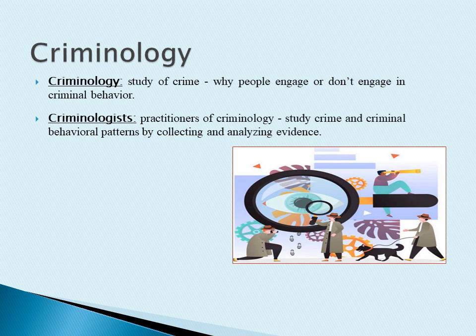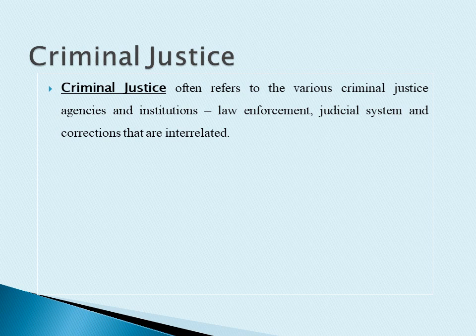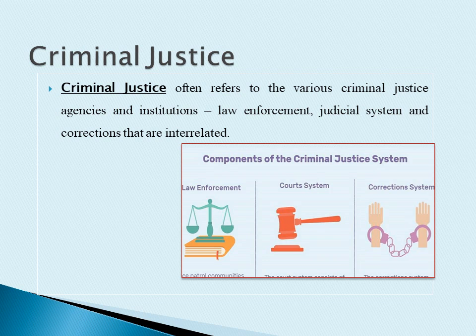They come up with ways to prevent or predict crime, effective investigation procedures, replacing criminal behaviors, etc. Criminal justice often refers to the various criminal justice agencies and institutions, which include law enforcement, judicial systems, and corrections and prison systems.